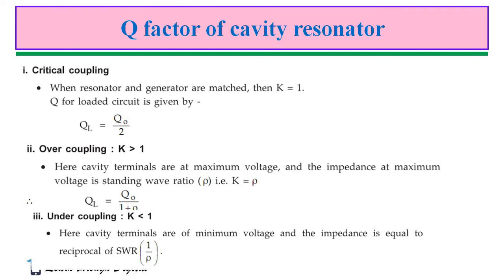For critical coupling, K = 1, meaning the resonator and the generator are both matched, and QL = Q0 / 2. For over coupling, K > 1 — the cavity terminals are at maximum voltage and the impedance at maximum voltage is the standing wave ratio ρ, so K = ρ and QL = Q0 / (1 + ρ). For under coupling, K < 1 — the cavity terminals are at minimum voltage and the impedance equals 1/ρ.